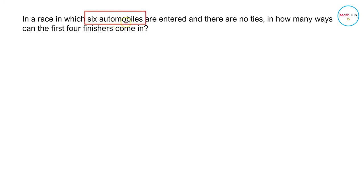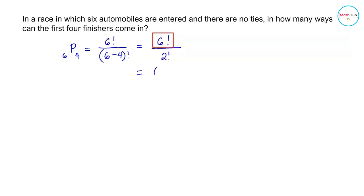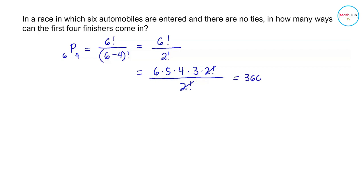We have six automobiles and want the number of ways four finishers can come in: P(6, 4) = 6! / (6 - 4)! = 6! / 2!. Rewriting 6! as 6 × 5 × 4 × 3 × 2!, we cancel 2! and multiply 6 × 5 × 4 × 3 to get 360 ways.